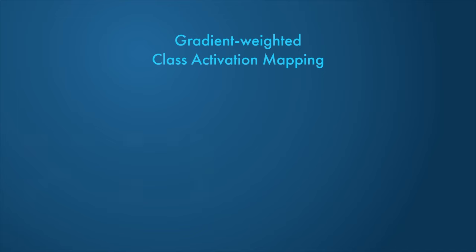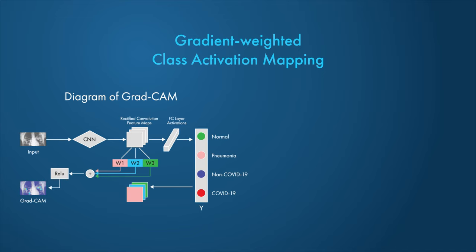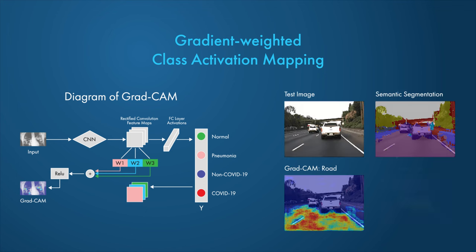GradCAM is a generalization of class activation mapping. It uses the gradients of the classification score with respect to the final convolutional feature map. The parts of the image with a large value for the GradCAM map are the most important for prediction.